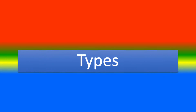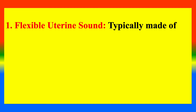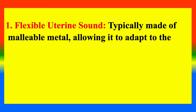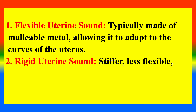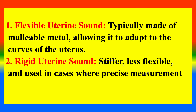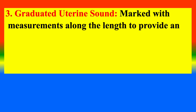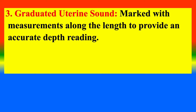There are three types of uterine sounds. The first type is the flexible uterine sound, typically made of malleable metal, allowing it to adapt to the curves of the uterus. The second is the rigid uterine sound, which is stiffer and less flexible, used in cases where a precise measurement is required. The third is the gradated uterine sound, marked with measurements along its length to provide an accurate depth reading.